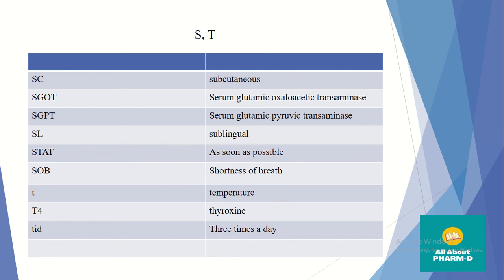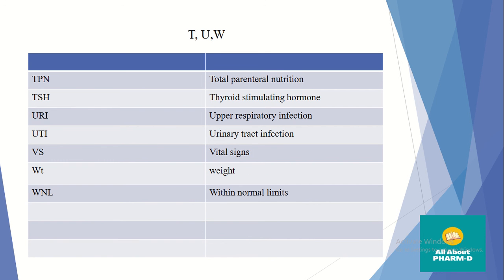SOB means Shortness of Breath. T means temperature. T4 is Thyroxine. TID means 3 times a day. TPN is Total Parenteral Nutrition. TSH means Thyroid Stimulating Hormone. URI is Upper Respiratory Tract Infection. UTI means Urinary Tract Infection. VS means Vital Signs.